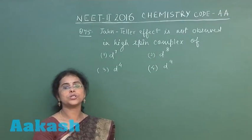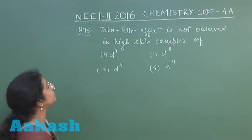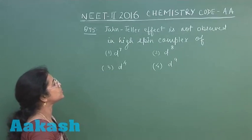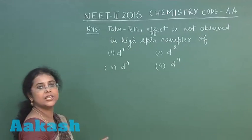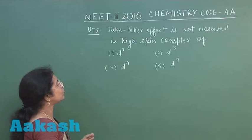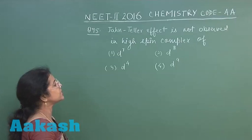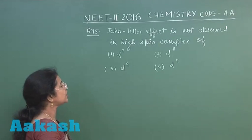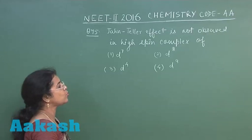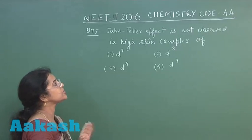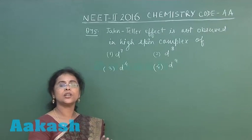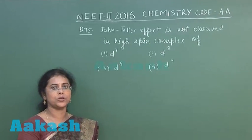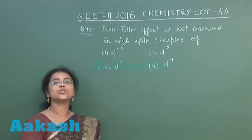Next question is question number 75. Jahn-Teller effect is not observed in high spin complex of: first option D7, second option D8, third option D4, and fourth option D9.